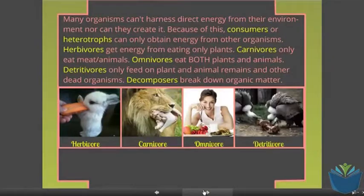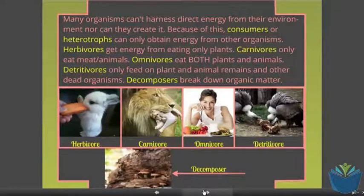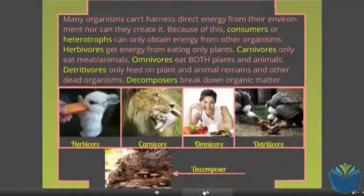Detrivores only feed upon dead material, and you have decomposers, and the decomposers are used to break down organic material and they are usually microorganisms. That is something you have learned about in the nitrogen and carbon cycle.